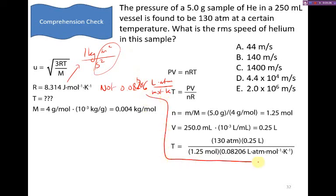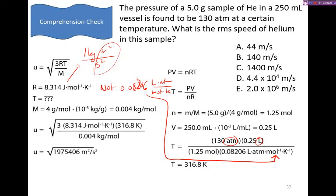Now again, notice that in this case, we're using this R constant. And that's because we have units involving liters and atmospheres. When we solve for the temperature, we get just under 317 Kelvin. Now we're ready to plug in the values. We have our molar mass, we have our temperature, and we have the R value. So we plug those in, simplify, and then take the square root. And we get that it's approximately 1400 meters per second.